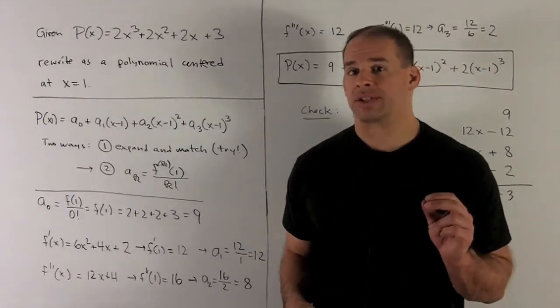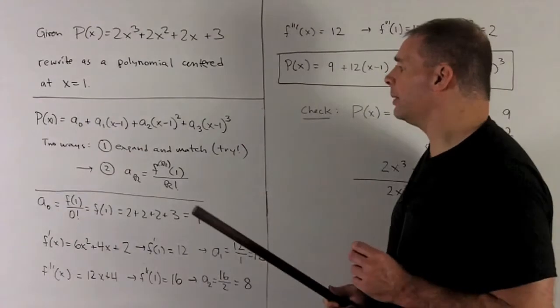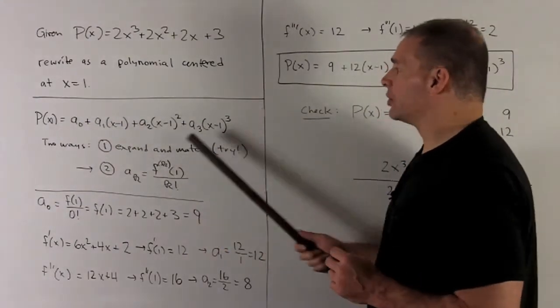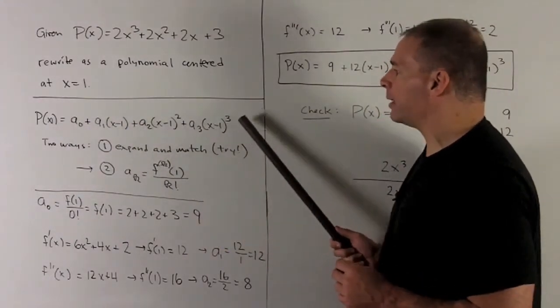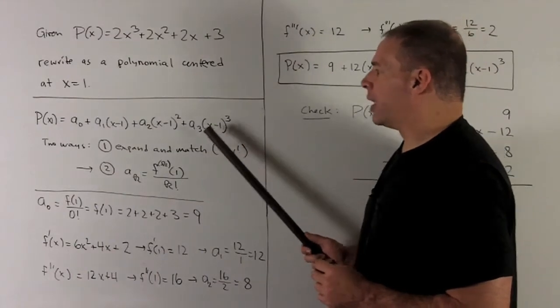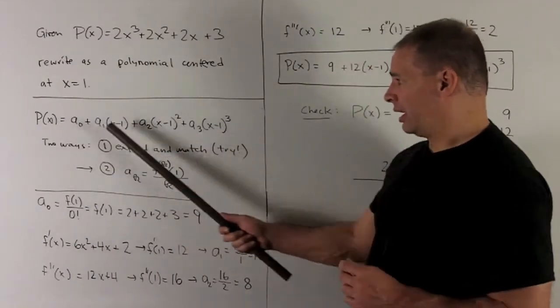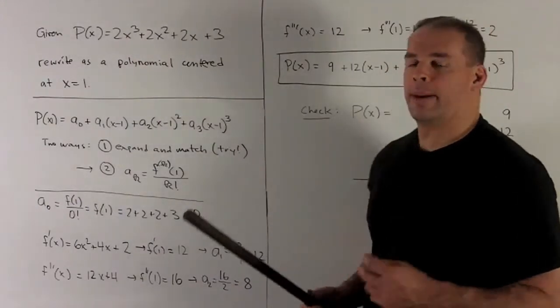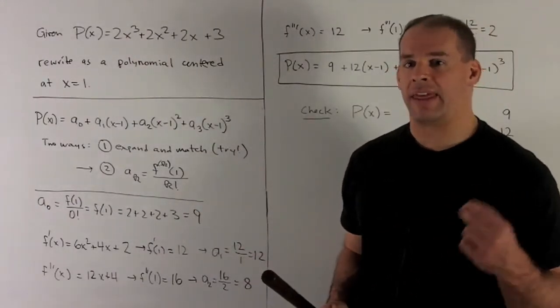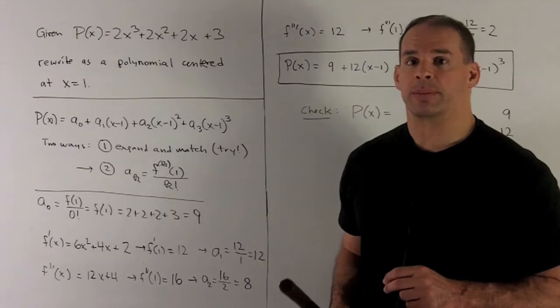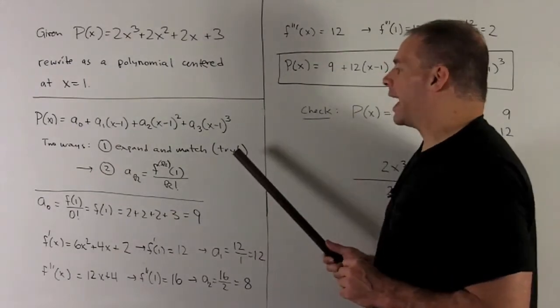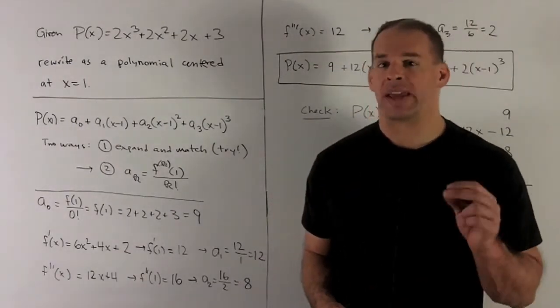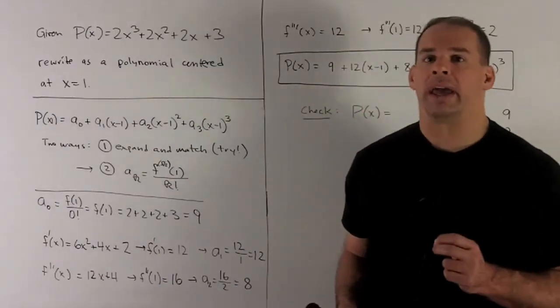So there's two ways we can solve this. The first is you can just expand this out, so expand each power of x minus 1. And then you'll get a bunch of equations in the a's when we set it equal to our original polynomial, match up your powers of x, and then solve those equations. So you should try to do that just to convince yourself that our second way is going to be a lot better.